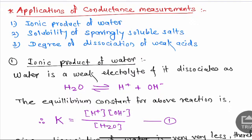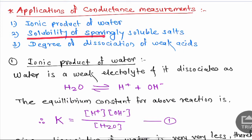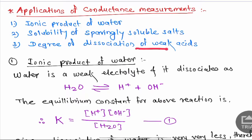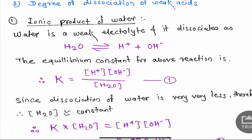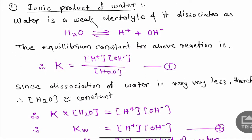Namaskar, I welcome all of you to today's session. Today we are going to discuss applications of conductometric measurements. Conductometry is widely used in the determination of ionic product of water, solubility of sparingly soluble salt, and degree of dissociation or ionization of weak acid. Let us discuss each application in detail.